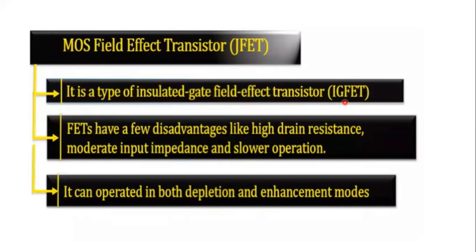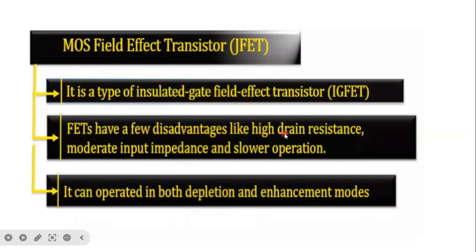MOSFET has a few advantages and also disadvantages. MOSFET is used for high switching applications. It has low switching losses but high conduction losses, so it cannot be used for conduction purposes. FETs including MOSFET have disadvantages like high drain resistance, moderate input impedance, and slower operation.